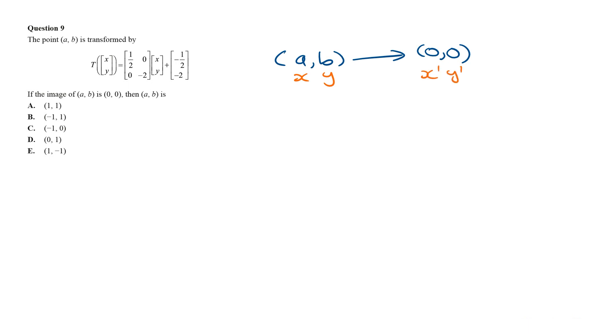Given the transformation matrices, we can find equations for x dash and y dash. If we expand the matrices, we're going to get x dash is equal to a half x minus a half, and y dash is going to be minus 2y minus 2.